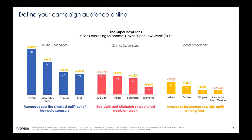When we define the campaign audience, we can see how each brand performed within this target group. Among auto sponsors, Mercedes-Benz saw the smallest lift. But Bud Light was a big winner in drinks, with more than 15x lift. Avocados from Mexico also performed well and received a 20x lift with Super Bowl fans.